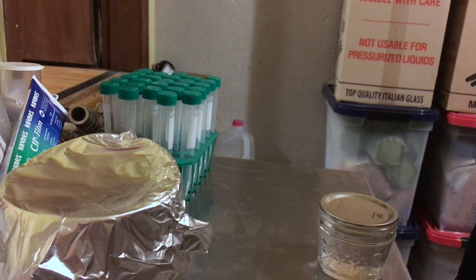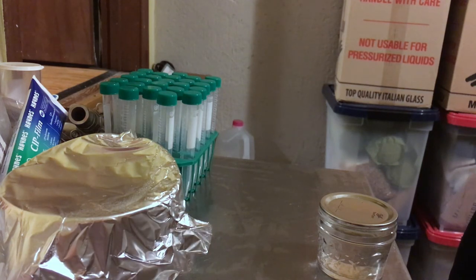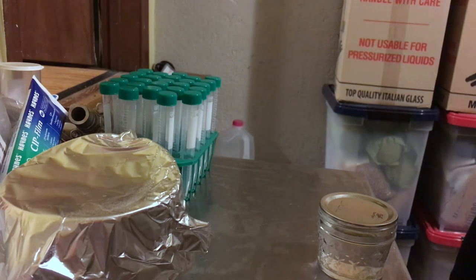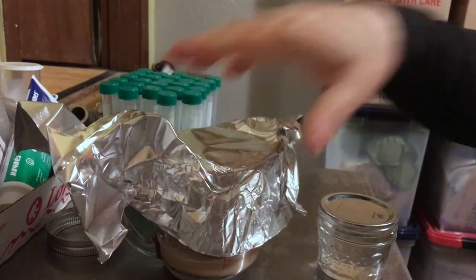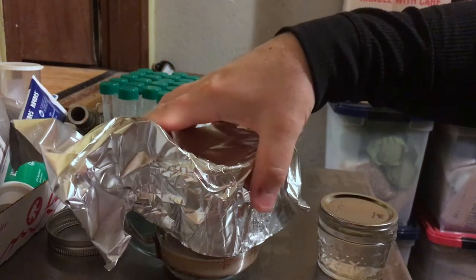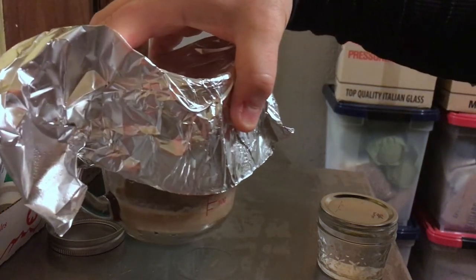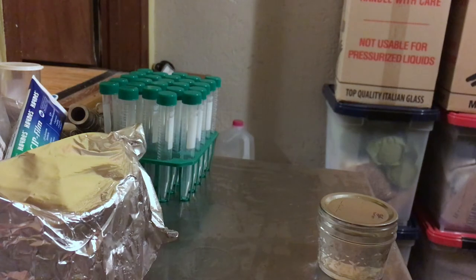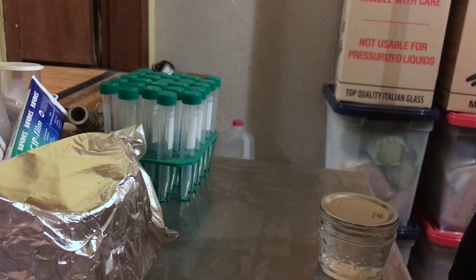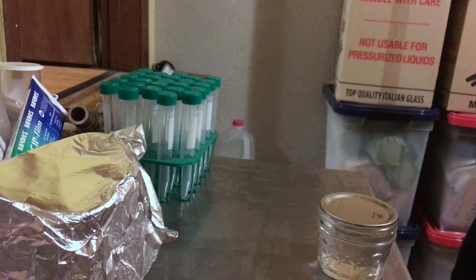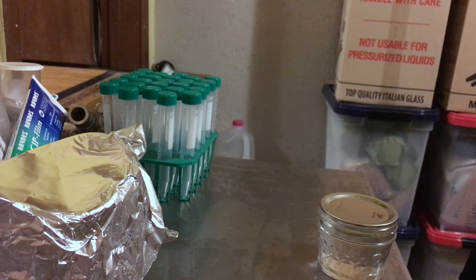Basically what I did is I took the smack pack on Monday night, smacked it, built up a nice big starter, and just cold crashed it today. I decanted off about 100 milliliters of fairly thick yeast that was in the starter and basically split what was there. I started another starter with what was left, so I just finished that. Now I'm going to put that yeast into some tubes and freeze it.